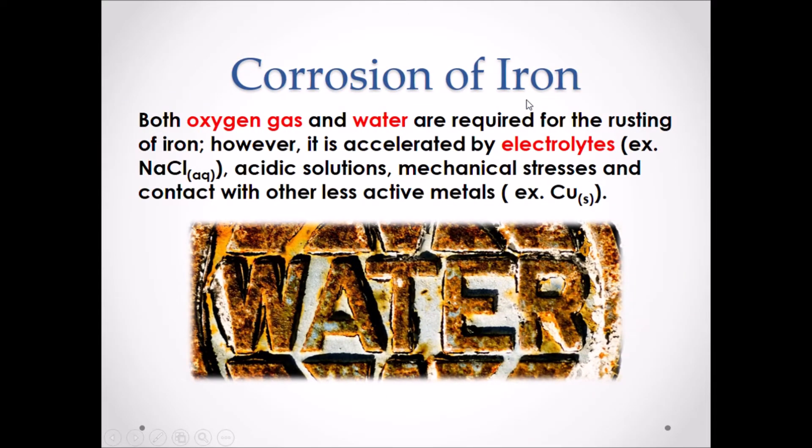Corrosion of iron. Both oxygen gas and water are required for the rusting of iron. However, this process is accelerated by electrolytes, acidic solutions, mechanical stress, and contact with other less active metals.